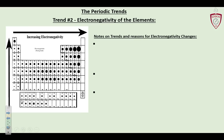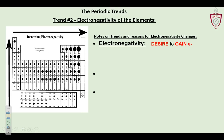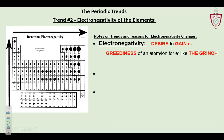Electronegativity was the thing that gelled chemistry for me as a chemist — this just clicked for me and it made everything else make sense. Electronegativity is the desire to gain electrons. How bad do I as an atom want another electron from another atom? How bad are you going to steal — or borrow — if you're in need? It's a measurement of it. It's like the Grinch, the greediness of an atom or ion for electrons.